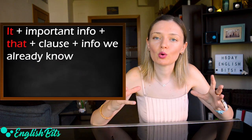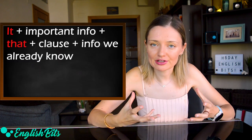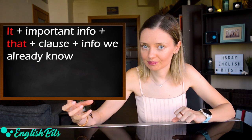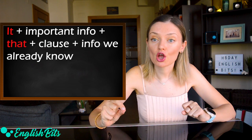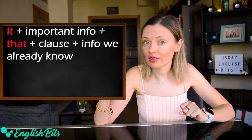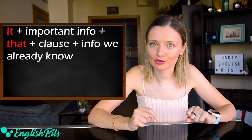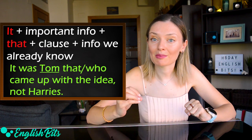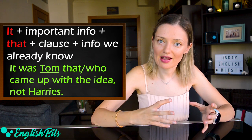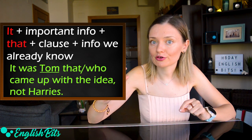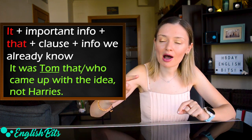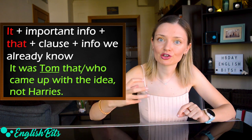First, we're going to focus on it-cleft sentences, which is the most common type. The information we want to emphasize comes after 'it.' It's followed by a clause usually beginning with 'that,' and it contains information that is already understood. For example: 'It was Tom who came up with the idea, not Harris.' Tom is new information, and 'came up with the idea' is information we already know.